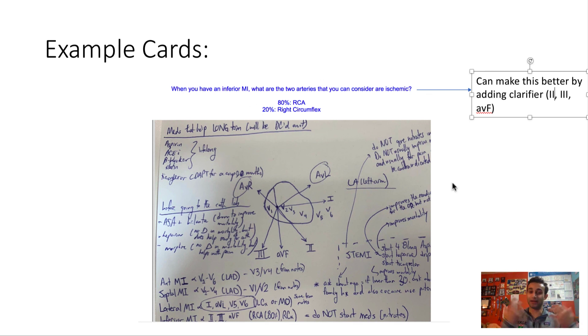One way to make this question better is, I could have said, when you have an inferior MI, which is denoted with an ST elevation in 2, 3, and AVF, what artery would be ischemic? 80% of the time, it's an RCA, because in 80% of patients, the RCA supplies the bottom part of the heart, and in 20% of patients, it's the right circumflex.